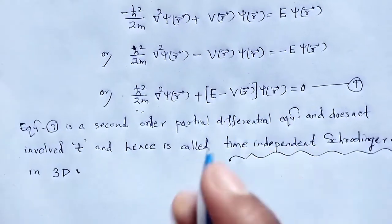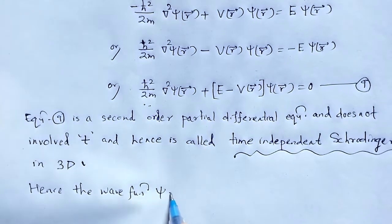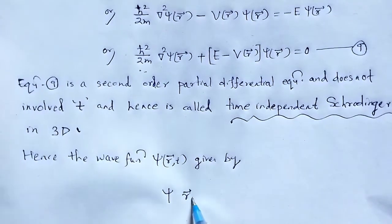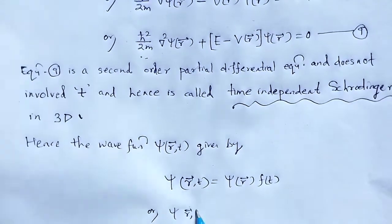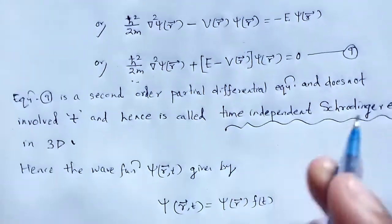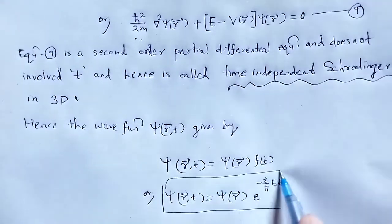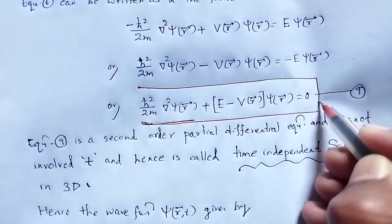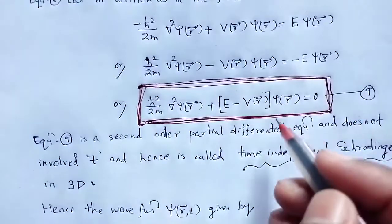Hence, the wave function ψ(R,T) is given by: ψ(R,T) = ψ(R)·f(T) = ψ(R)·e^(−iEt/ℏ). That is equation number 10. So, that is the time-independent Schrödinger equation — time-independent means the probability density does not depend upon time; it is the time-independent Schrödinger equation.